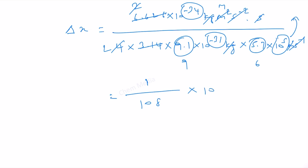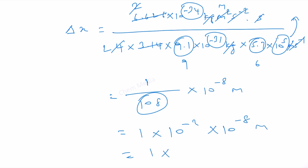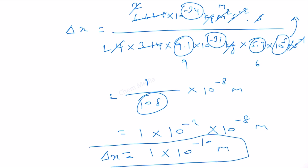Eventually, what we get is approximately 10 to the power minus 8 meter. Taking 108 as approximately 100, we can write it as 1 times 10 to the power minus 2 times 10 to the power minus 8. Therefore, this equals 1 times 10 to the power minus 10 meter. So that is the uncertainty in the position of the electron.